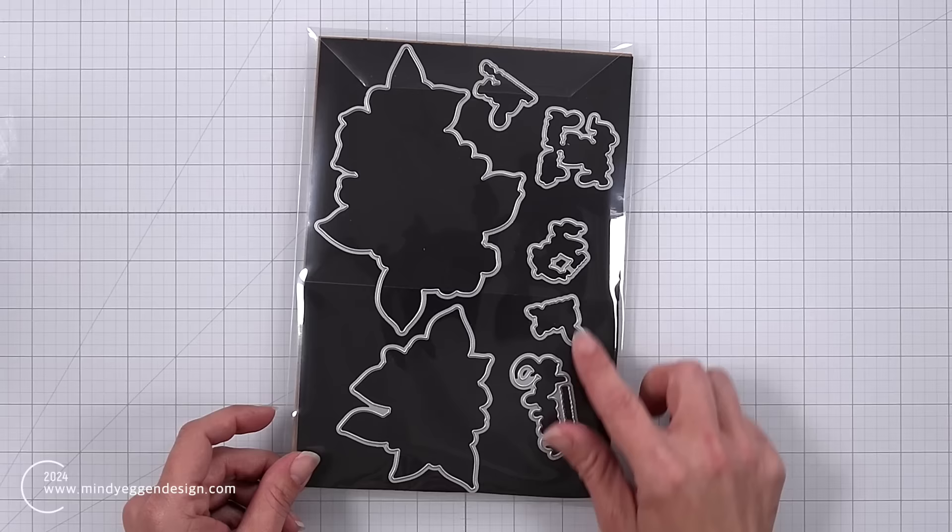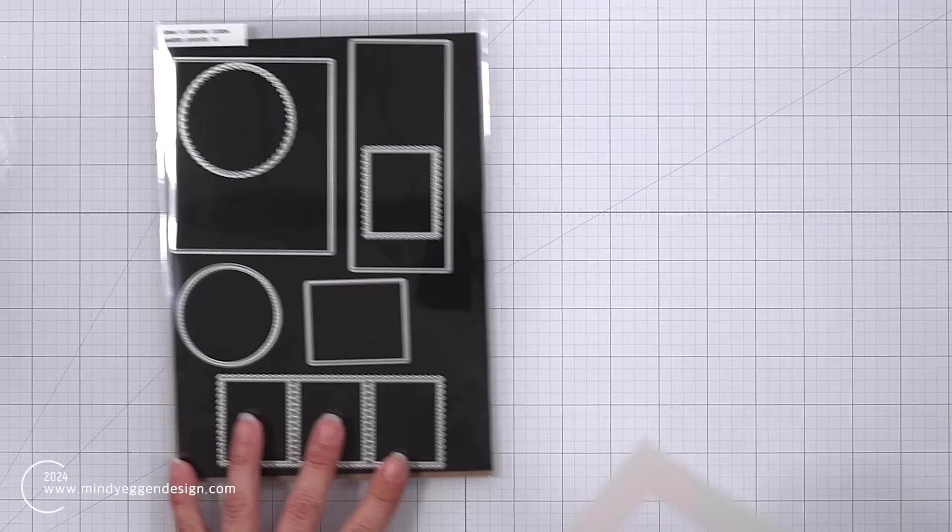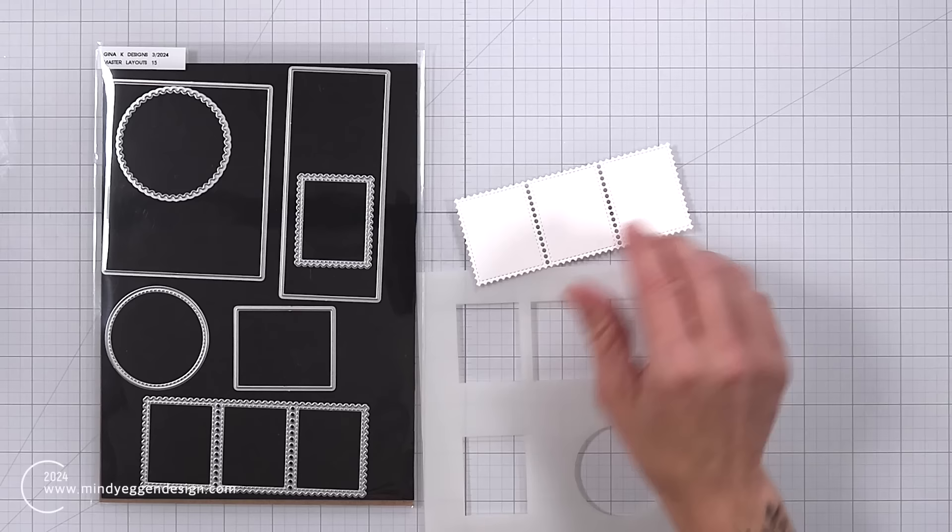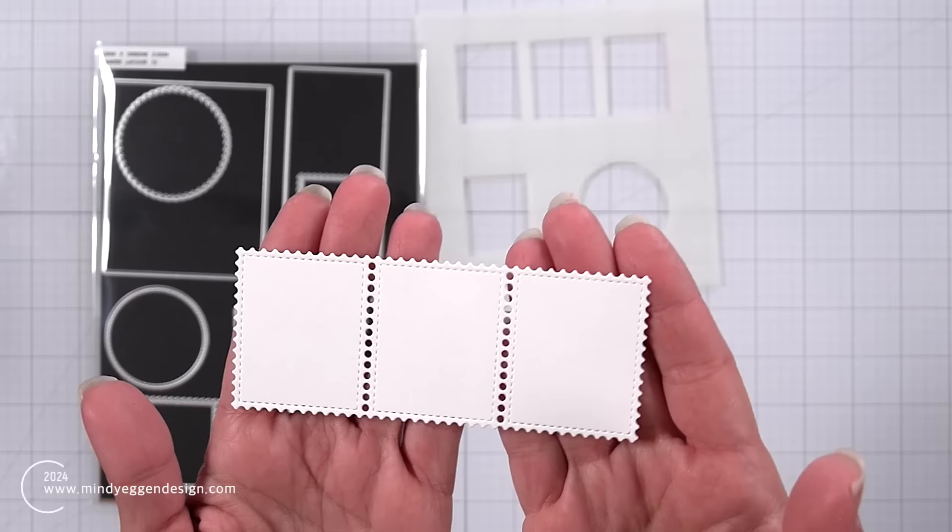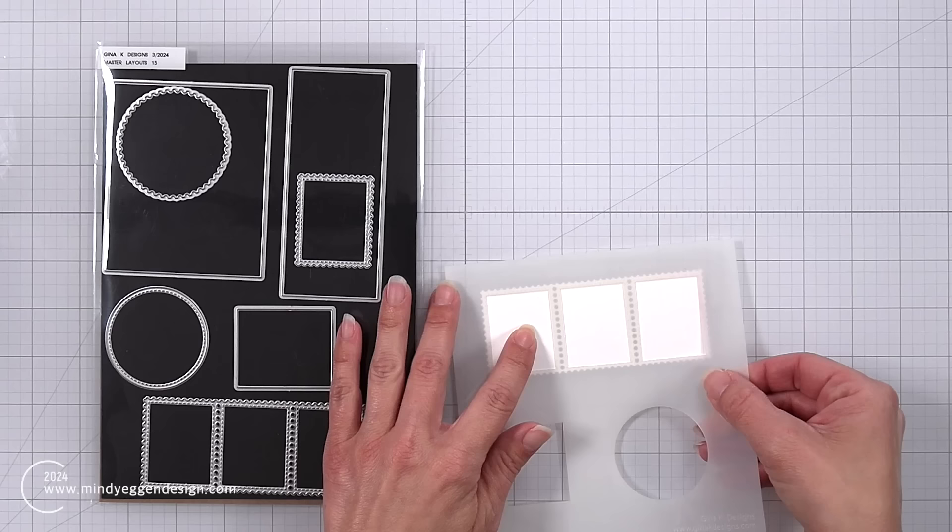Now if you are a fan of the master layouts and also the postage look that Gina has in her line, you are going to love master layouts 15. This one has some additional postage images and also a coordinating stencil. So you can use these with or without the stencil. I absolutely love stencils. If you follow me you know that I find them super helpful. So this is a look at that postage strip. You can see it is you can do it horizontally or vertically. It has those stitched lines in there. You can also cut them apart to create individual stamps and the stencil is going to help mask that off.